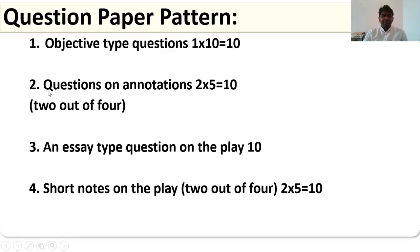Second section is questions on annotations. What do you mean by annotations? They will give 4 important dialogues from the drama Siri Sampige. You have to explain the dialogues according to their context in the drama. First, you have to write who has delivered the dialogue, to whom it has been delivered, and in which context that particular dialogue arises in the drama. They will give you 4 annotations, out of 4 you have to write 2. Each one carries 5 marks, that will be 10 marks.